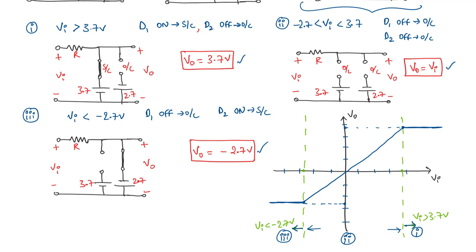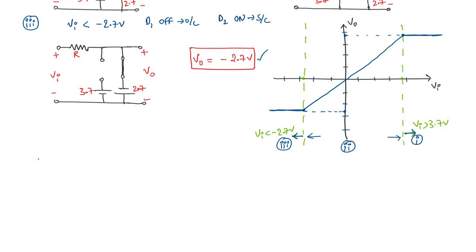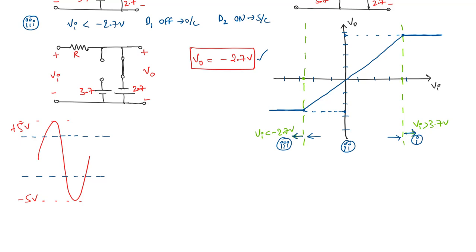If we apply an input waveform ranging from minus 5 volts to plus 5 volts, the output waveform will be clipped at the two reference levels. The amplitude of the output is limited to 3.7 volts on the positive side and minus 2.7 volts on the negative side.